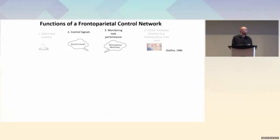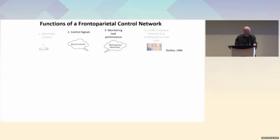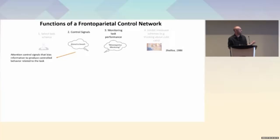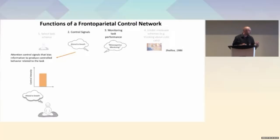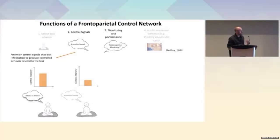I'm going to be talking about the frontal-parietal on-task network further today. It's thought to contribute four functions to maintain the on-task state, and I'll focus on two of them. The first is control signals: the frontal-parietal network generates control signals that bias information to produce controlled task-related behavior. A higher control signal corresponds to a more vivid representation of the breath in mind, while a lesser control signal corresponds to a less vivid representation.